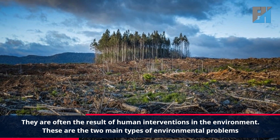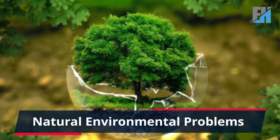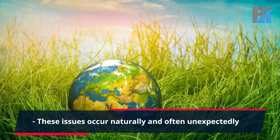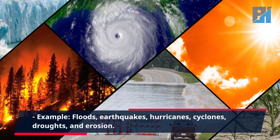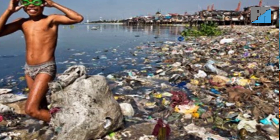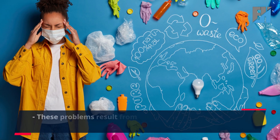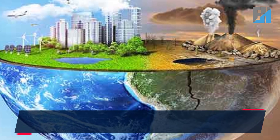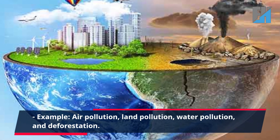There are two main types of environmental problems. First, natural environmental problems — these issues occur naturally and often unexpectedly. Examples include floods, earthquakes, hurricanes, cyclones, droughts, and erosion. Second, man-made environmental problems — these problems result from the daily activities of human beings. Examples include air pollution, land pollution, water pollution, and deforestation.